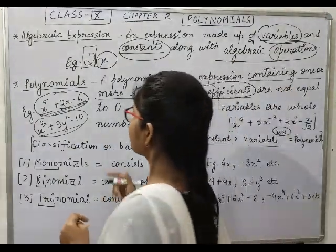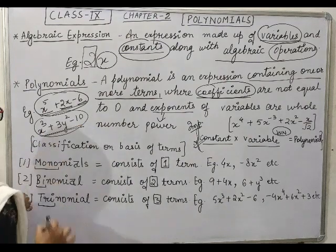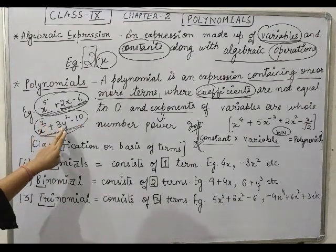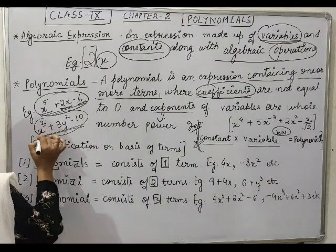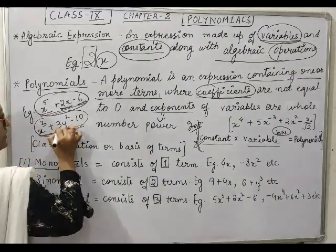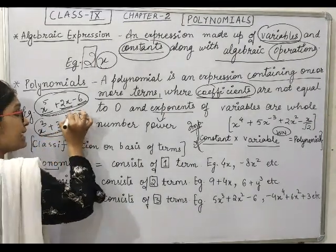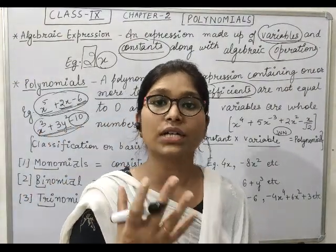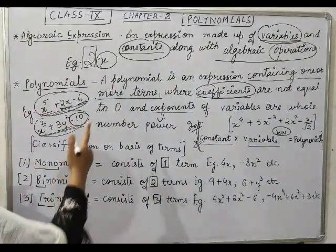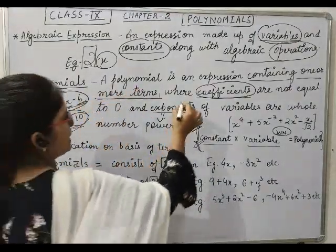Next is in the second example: x cube plus 3y square minus 10. Here also terms - x cube is a term, 3y square is a term, then minus 10 is a term. With symbols we have to tell the term. So here that thing is clear now.